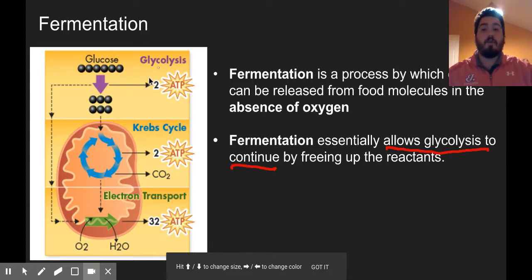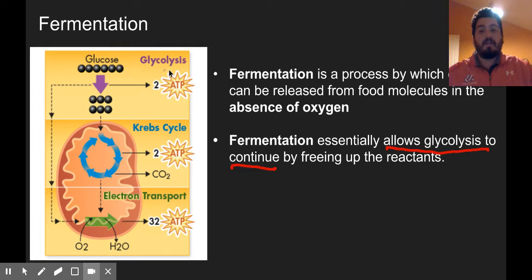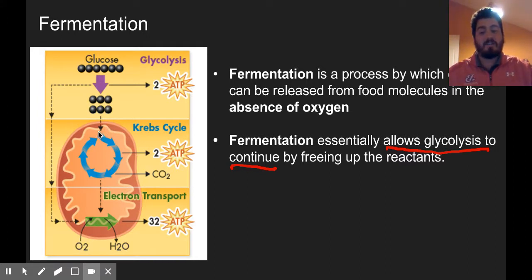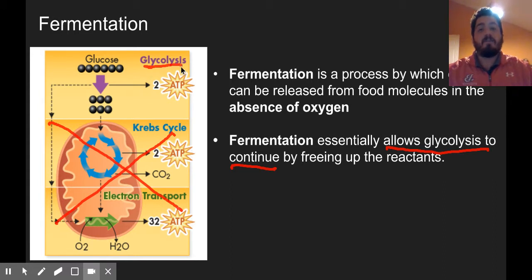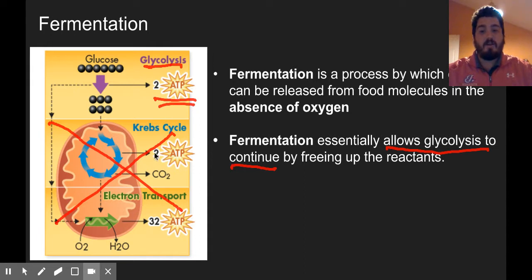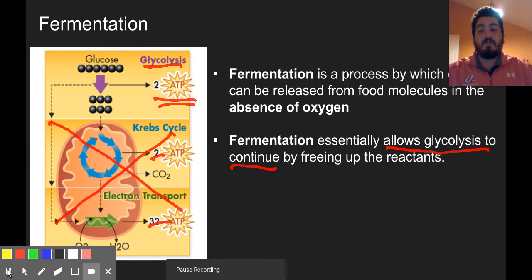Fermentation is going to allow glycolysis to keep going even though there's no oxygen. Your muscles don't have enough oxygen, or you're living in a thick pond with no oxygen present. Your body or the organism is not doing the Krebs cycle or the electron transport chain — they're only doing glycolysis. Fermentation is just a way to let glycolysis continue a little bit longer, so you can keep making these two ATPs. We're only making these two ATPs — not the other 34 — but it'll be enough for whatever organism is doing it to keep living.